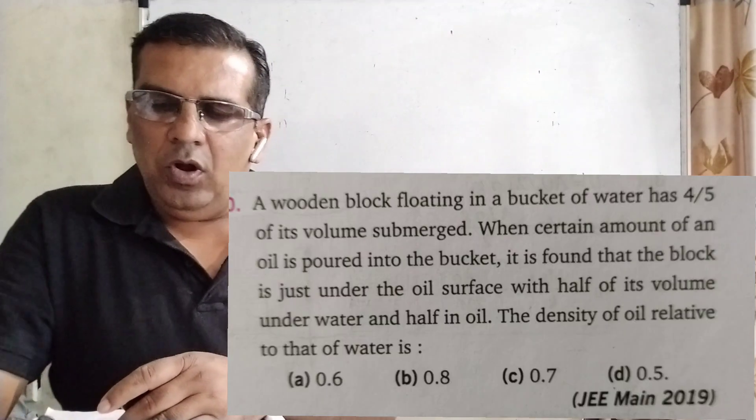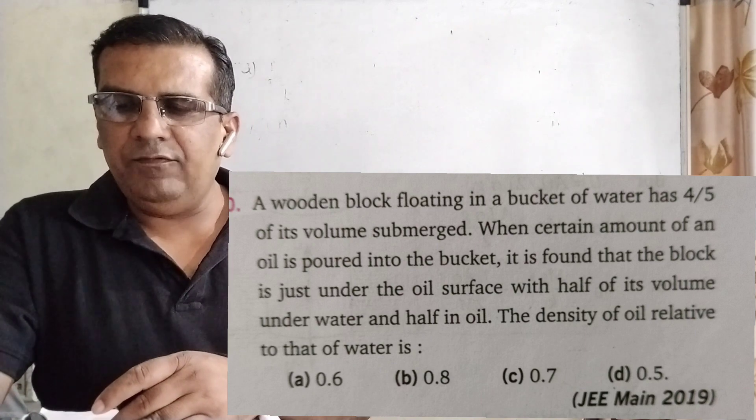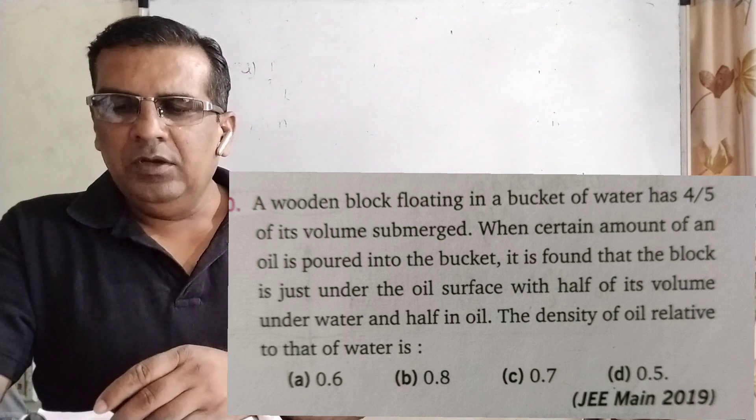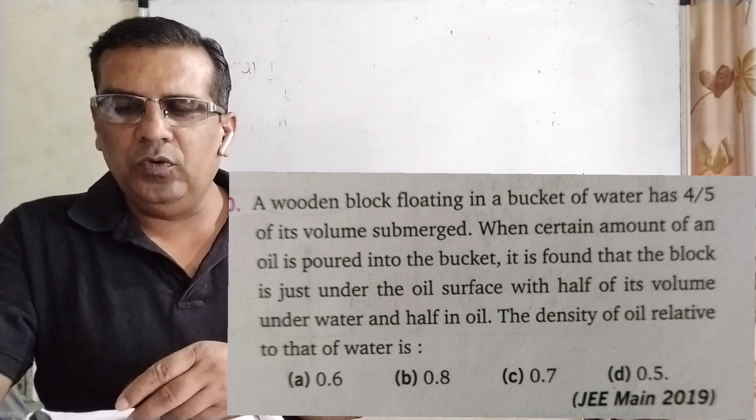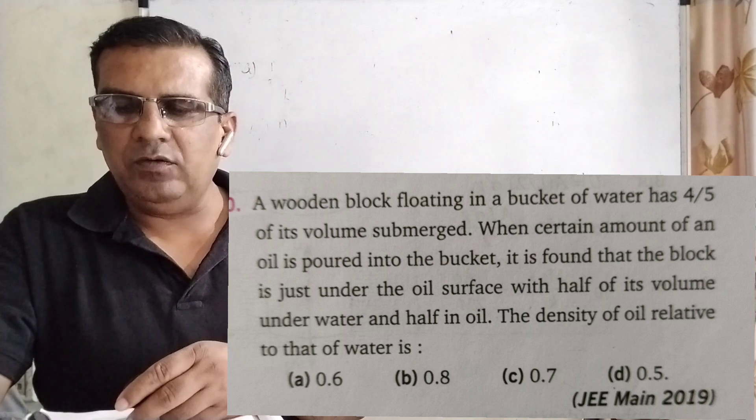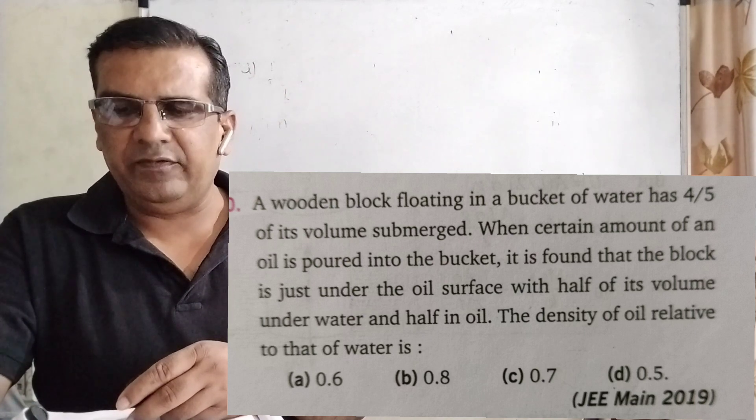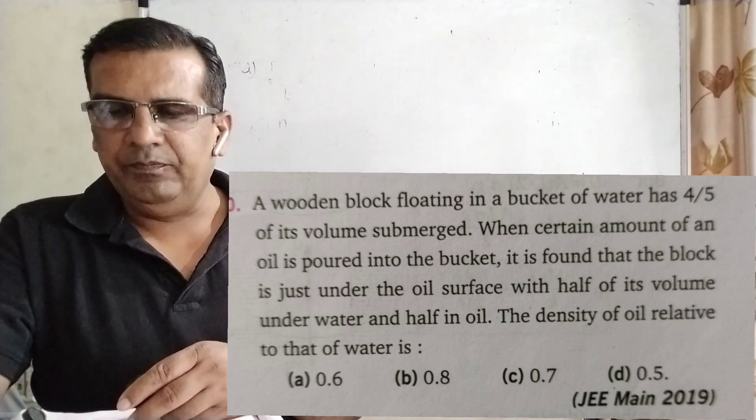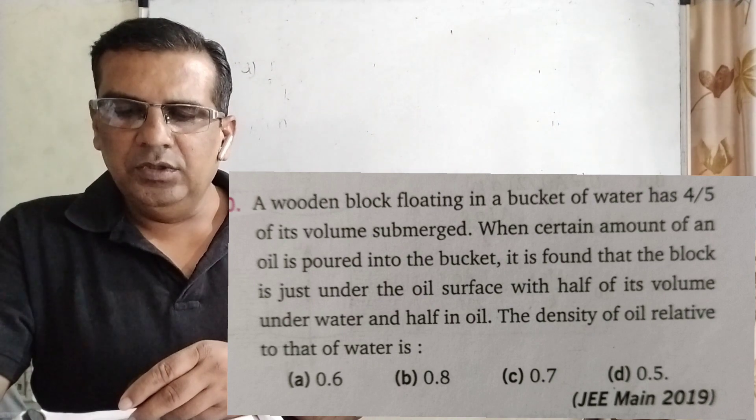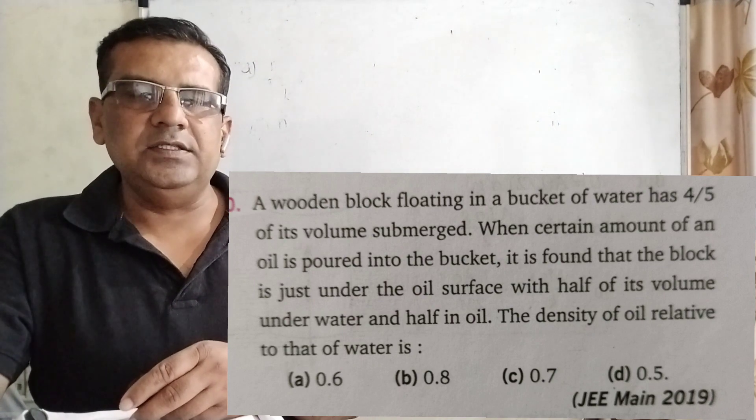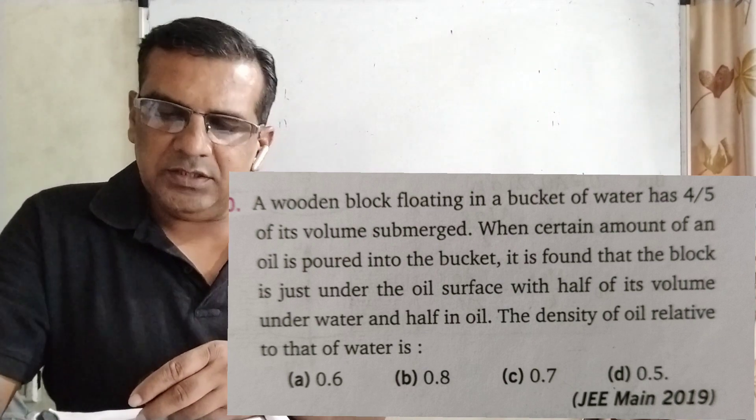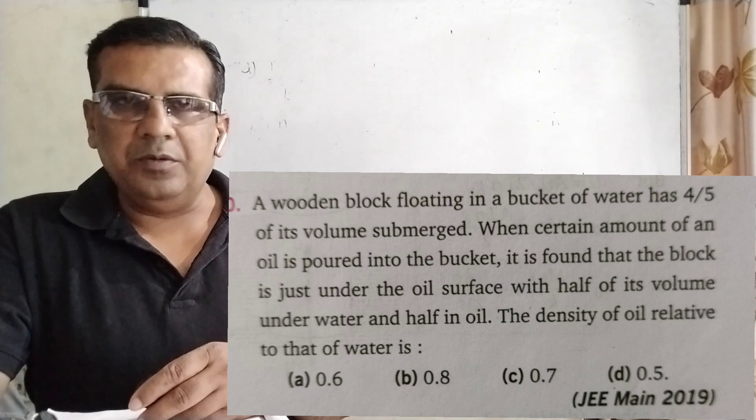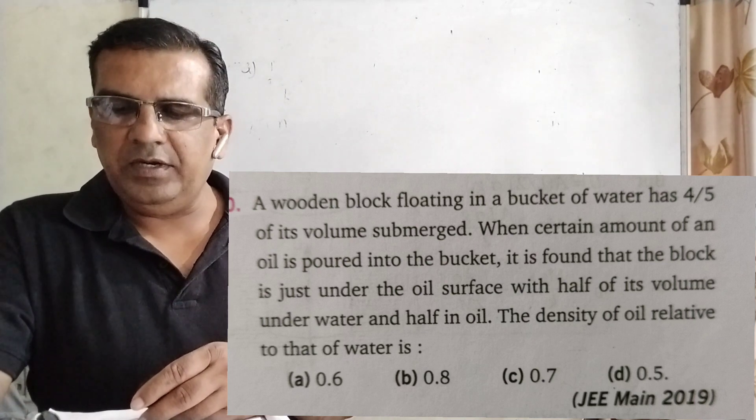Question is here. A wooden block floating in a bucket of water has 4 by 5 of its volume submerged. When certain amount of an oil is poured into the bucket, it is found that the block is just under the oil surface with half of its volume under the water and half in oil. The density of oil relative to that of water is. Here are 4 options: 0.6, 0.8, 0.7, 0.5.